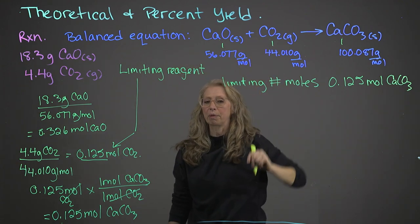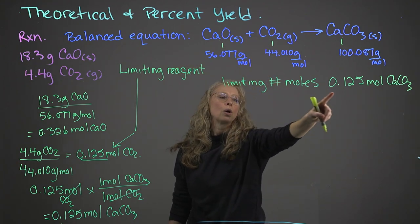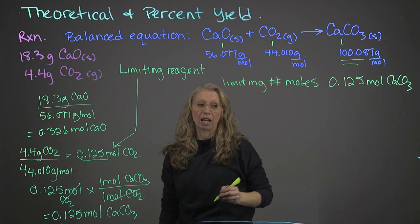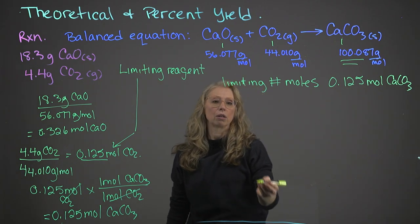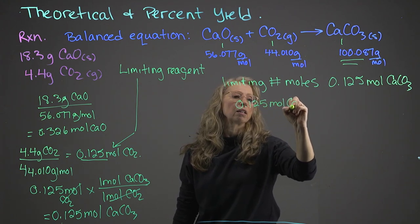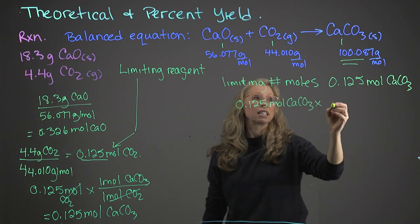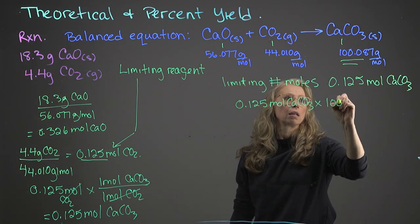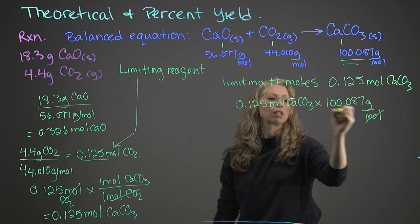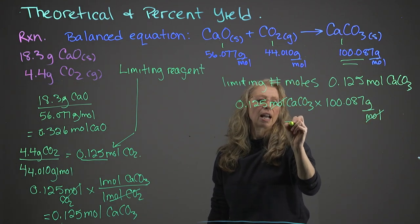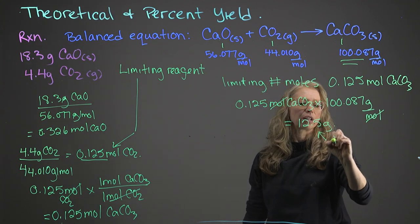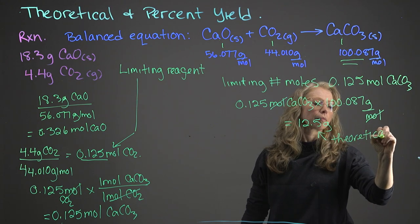Theoretical yield. Yield means we want to know what the mass is. So, we need to now take the molar mass of calcium carbonate and convert this into grams. So, we say that 0.125 moles of calcium carbonate, and we multiply it by the molar mass, 100.087 grams per mole, we will see that our moles cancel and we're left with units of grams, and our final answer is 12.5 grams. So, this is our theoretical yield.